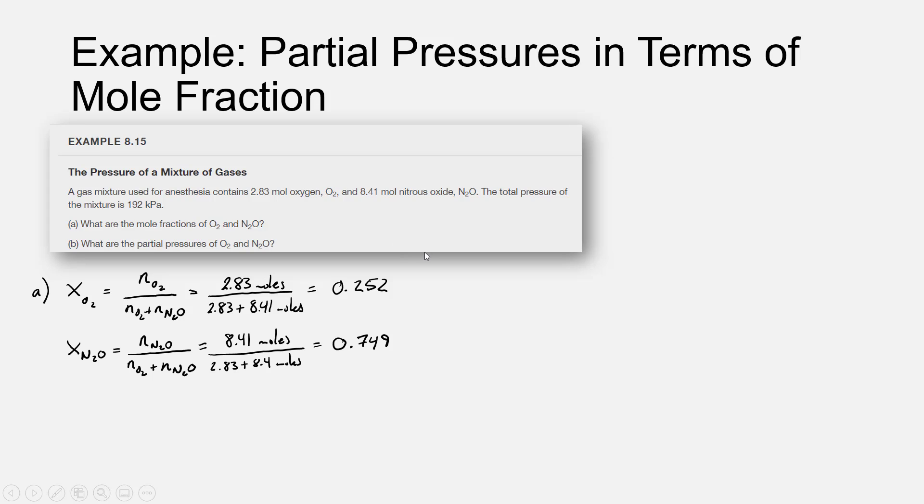The key thing to remember now is that Dalton's law tells us that we can calculate the partial pressure of each component of a gas phase mixture by taking the mole fraction times the total pressure. So if our total pressure is 192 kilopascals, now that we know the mole fraction of O2 and the mole fraction of N2O, we can calculate the partial pressure of each simply by taking the mole fraction X times the total pressure.